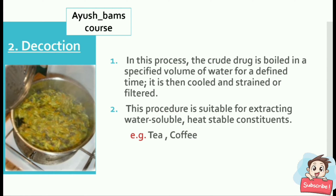The second method is decoction. In this process, the crude drug is boiled in a specified volume of water for a defined time. It is then cooled and strained or filtered. This procedure is suitable for extracting water-soluble and heat-stable constituents. For example, tea and coffee.